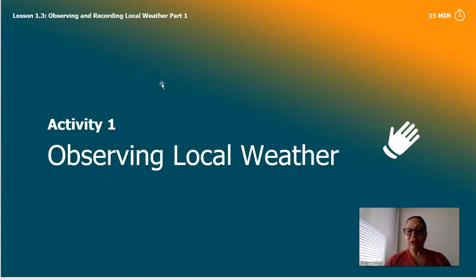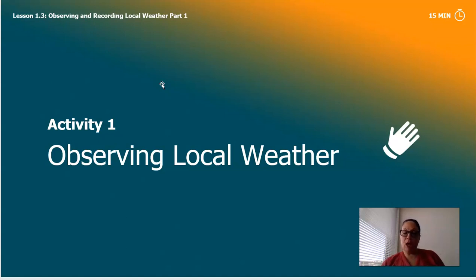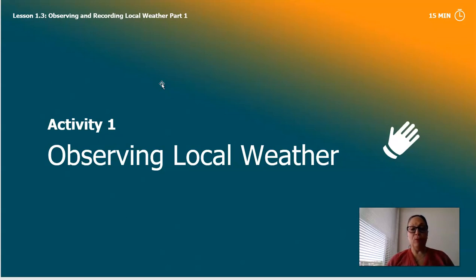So on our first activity, we're going to be observing local weather. But before we do that, I want to make sure that you know what the word local means. When we're looking at local weather, it is the weather around us, where we live. So depending on where you live, that's the weather you're going to have. So you're going to be observing the local weather, the weather that is around you.